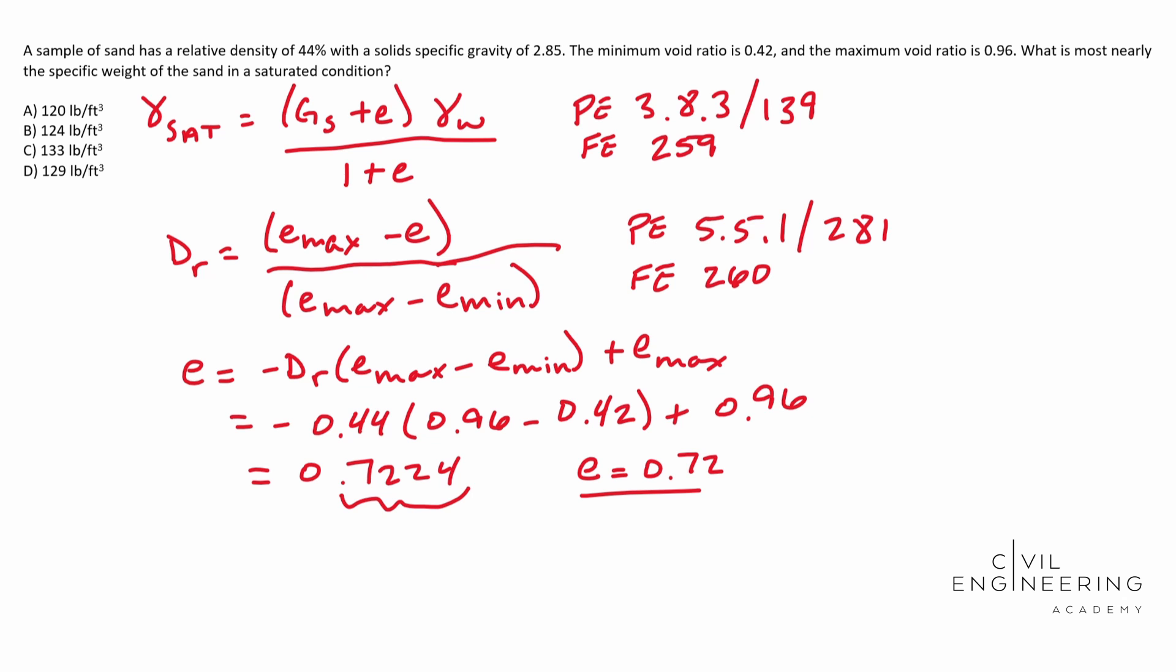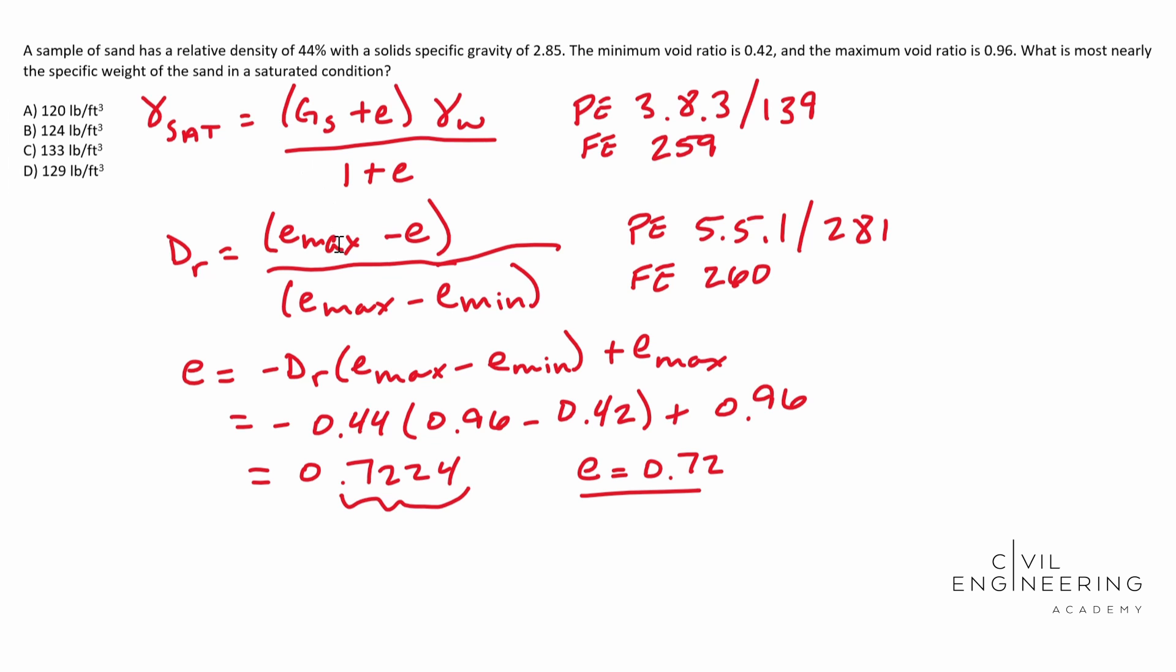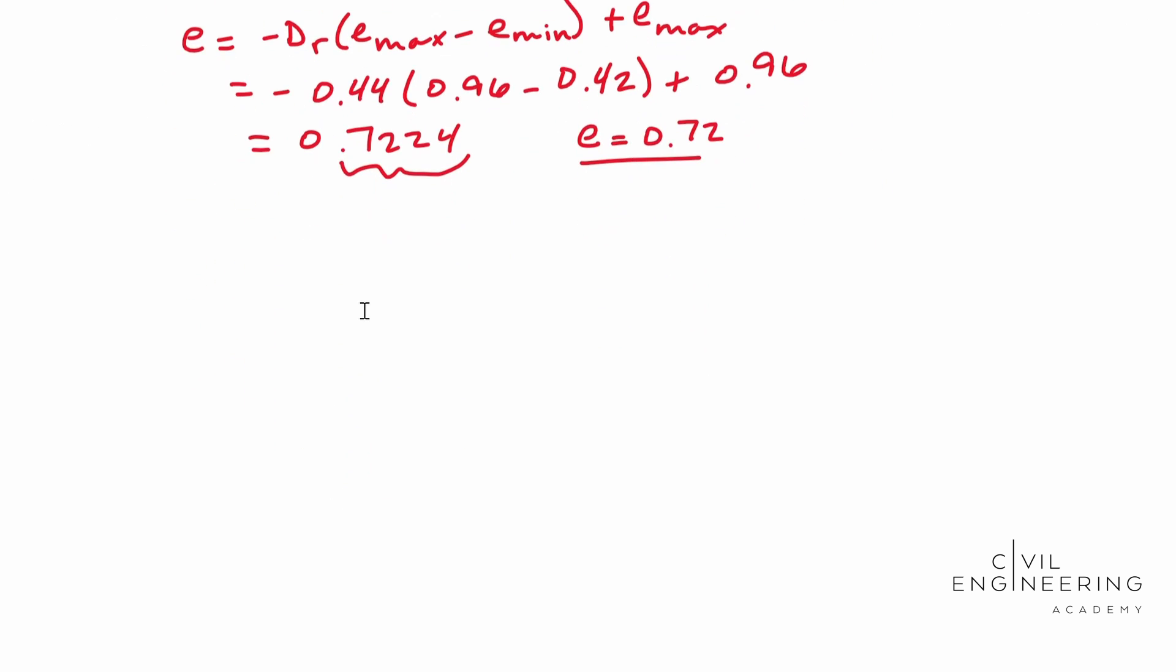So let me go ahead and scroll down. We're going to plug and chug now. So when we plug and chug, you're going to do your gamma saturated is equal to, and we're just plugging in the numbers, 2.85 minus 0.7224. And we're multiplying that by our gamma water, which is 62.4 pounds per cubic foot.